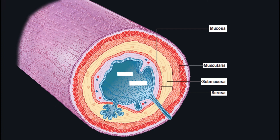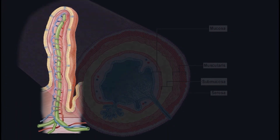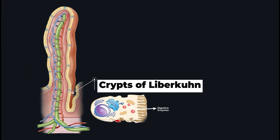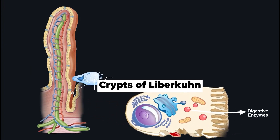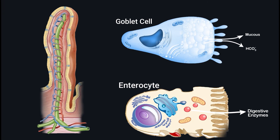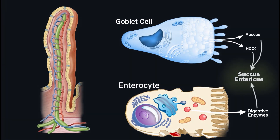The Brunner's glands secrete bicarbonate and mucus, which makes the environment of the small intestine quite alkaline. In the rest of the small intestine we have the crypts of Lieberkühn, which are lined by enterocytes that secrete enzymes, and goblet cells that secrete bicarbonate and mucus. The enzymes, bicarbonate, and mucus together form the intestinal juice, also known as succus entericus.